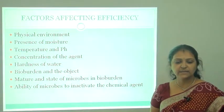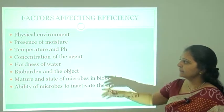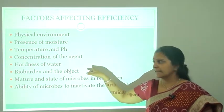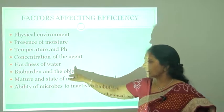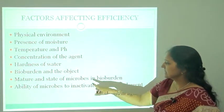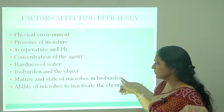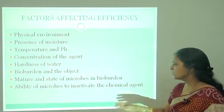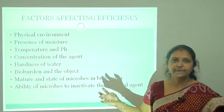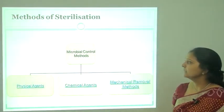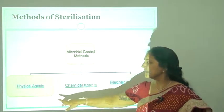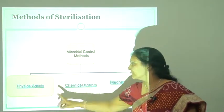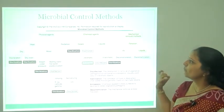Factors affecting the efficiency of sterilization include: physical environment, presence of moisture, temperature, pH, concentration of the sterilizing agent, hardness of the water, the nature and state of the microorganisms present, and the ability of microorganisms to inactivate the chemical agent. Microbial control methods include three categories: physical agents, chemical agents, and mechanical removal.